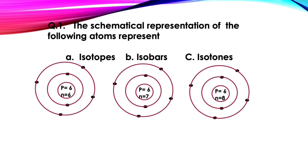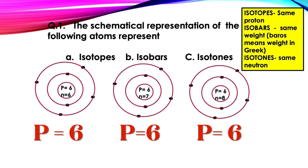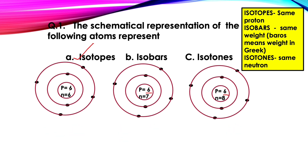Let us solve a few questions. The first question: the schematic representation of the following atoms — are they isotopes, isobars, or isotones? From the diagram, the number of protons for the first, second, and third atoms are all 6. Same proton means isotopes. The number of electrons is also the same, but the number of neutrons are different. So these are isotopes because of the same proton number.